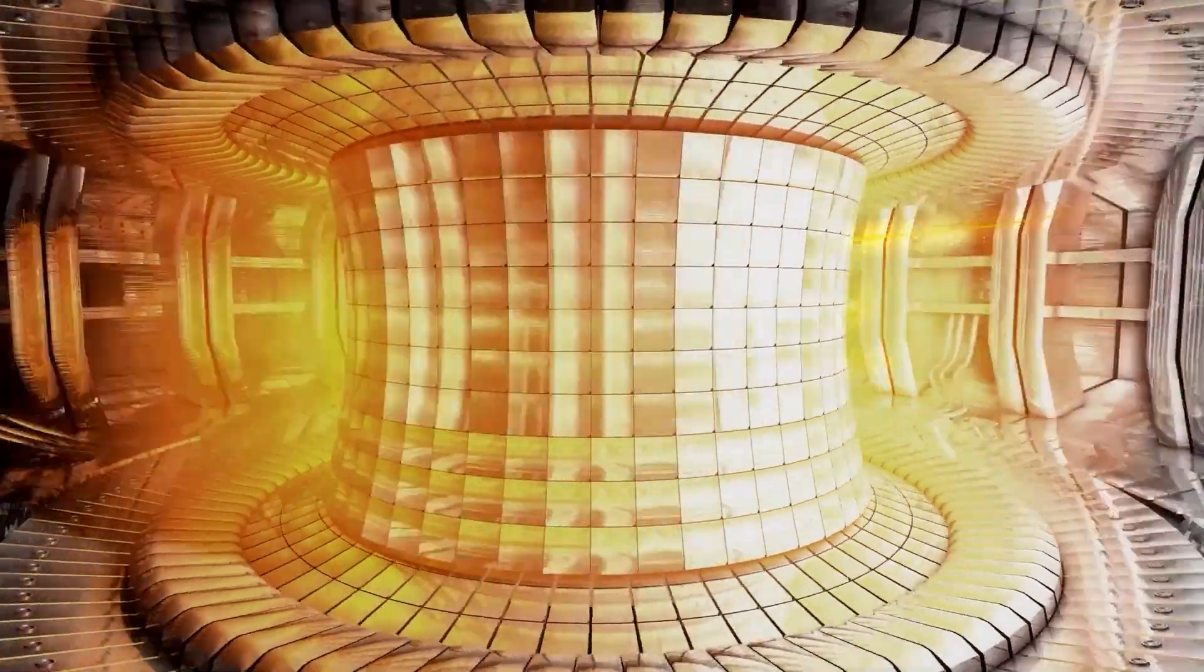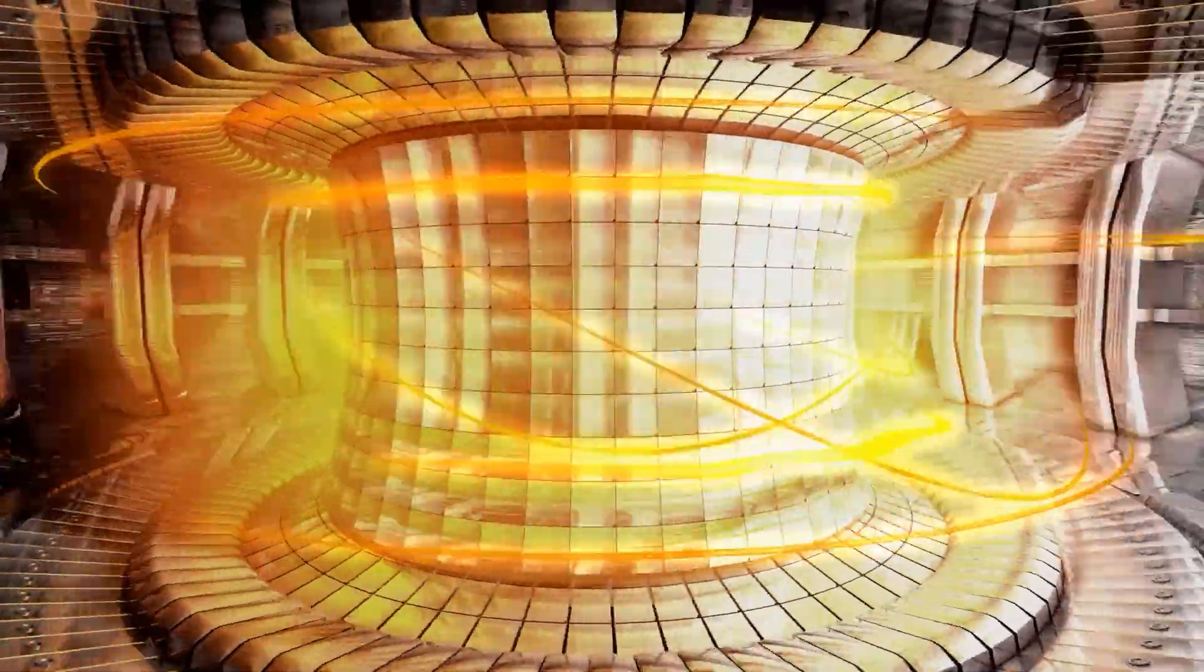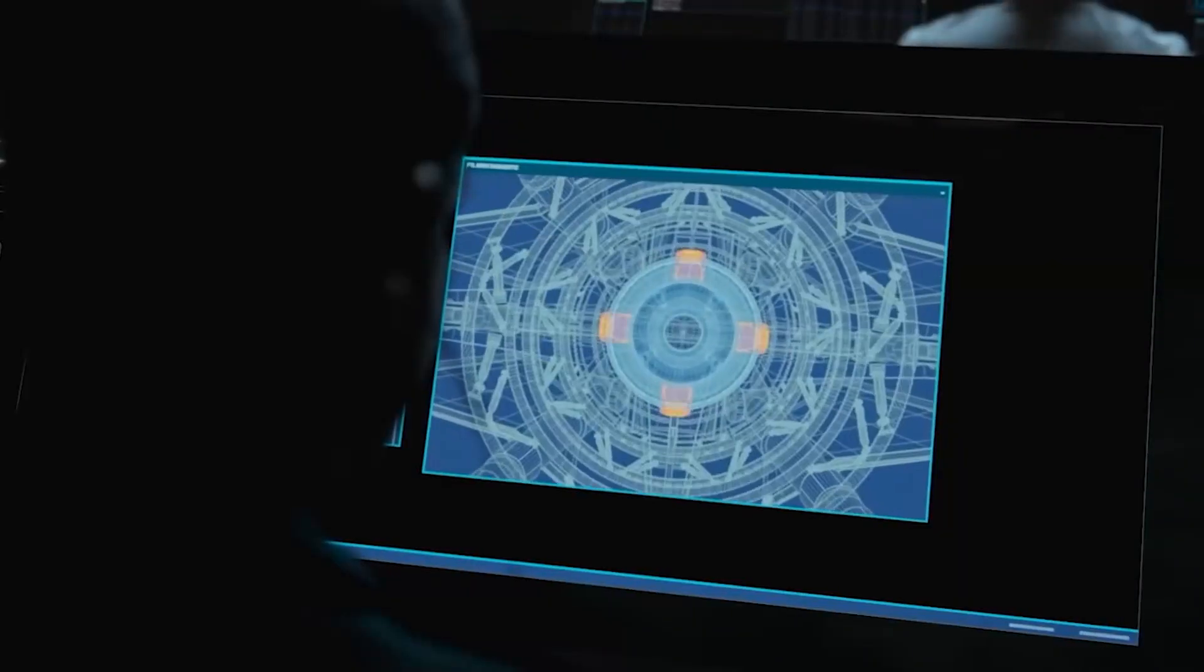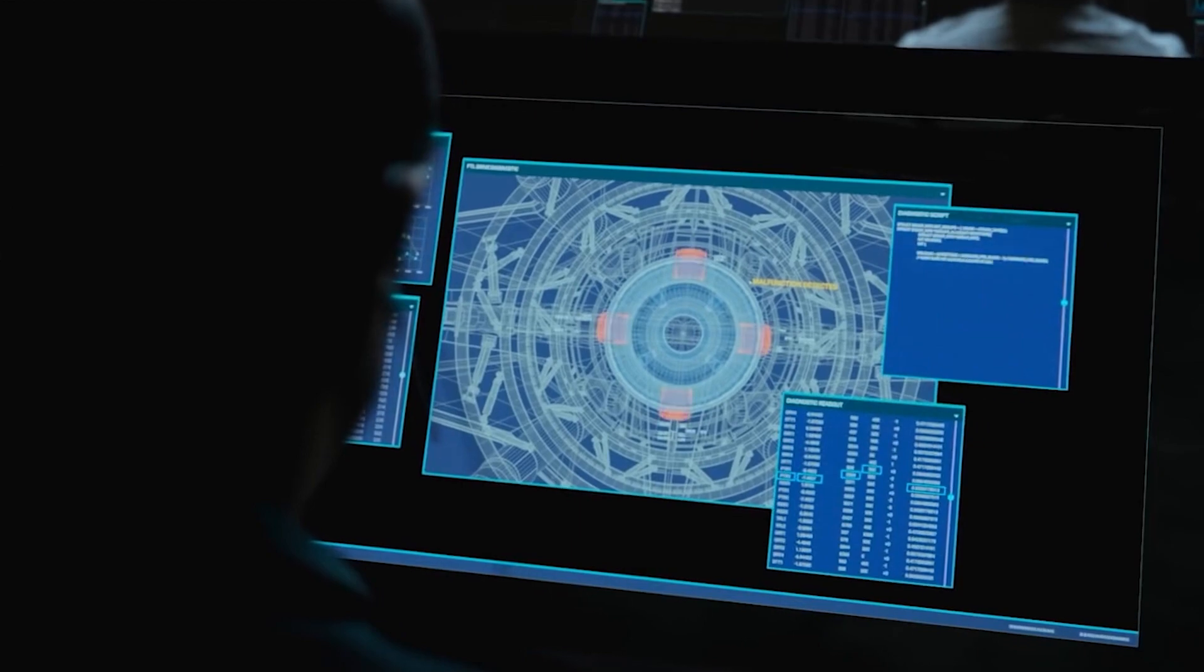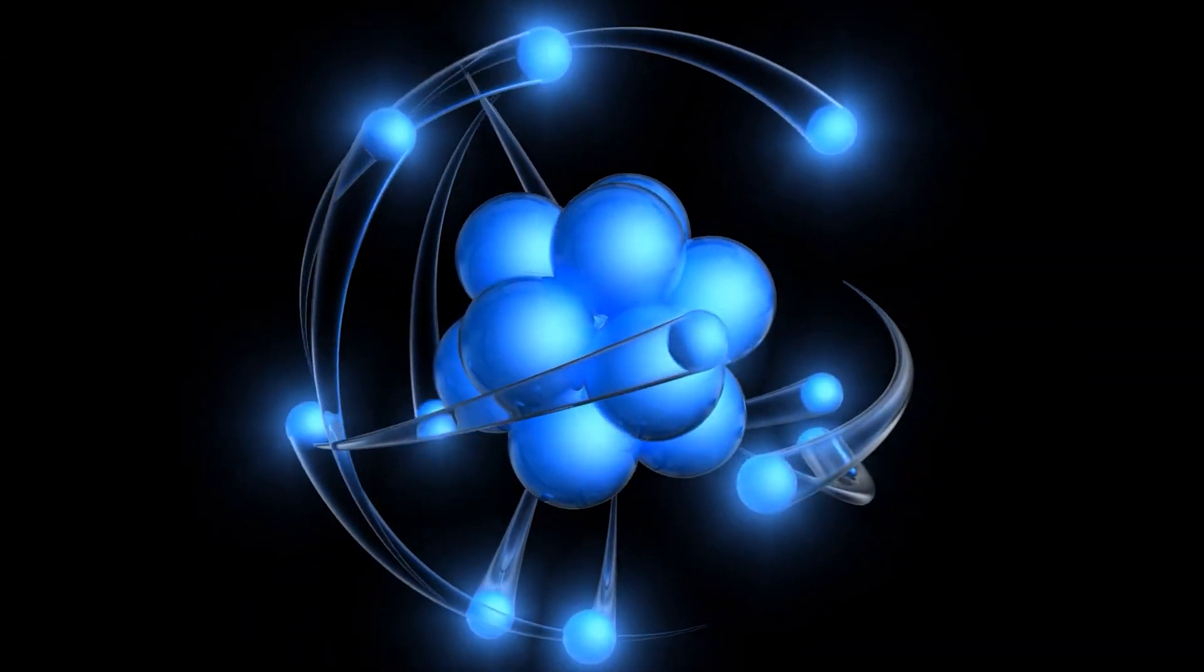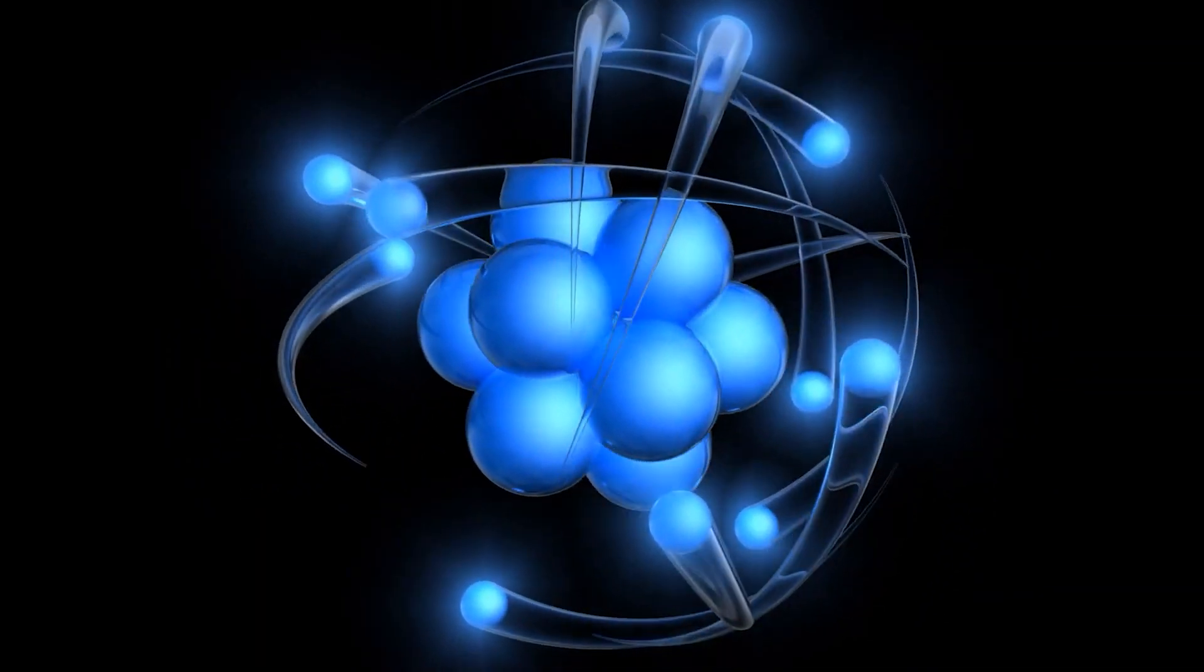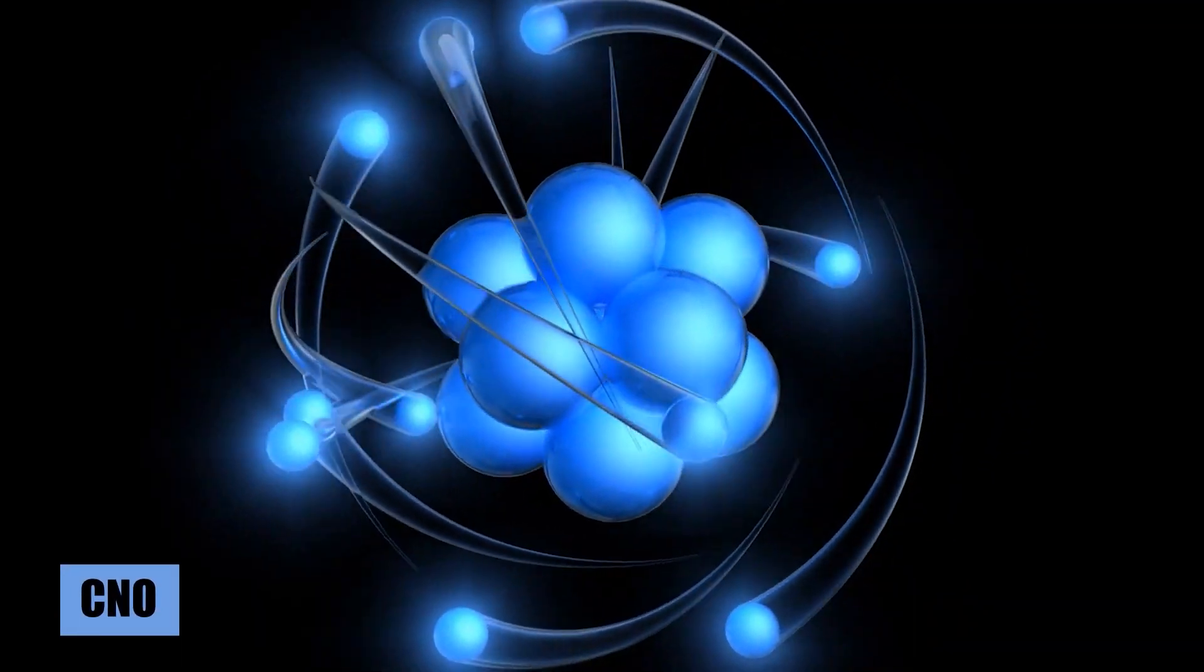After collecting interstellar fuel, hydrogen goes to fusion reactor at the middle of the ship. Reaction is based on proton-proton fusion. Alternatively, for better efficiency, catalytic nuclear reaction chain, or CNO, is preferred.